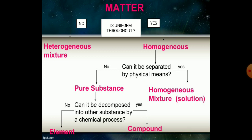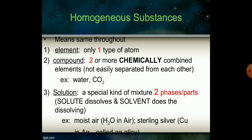A pure substance can be decomposed into other substances by chemical processes — that is, into elements and compounds. A homogeneous substance, meaning an element, has only one type of atom. A compound consists of two or more chemically combined elements that are not easily separated from each other.